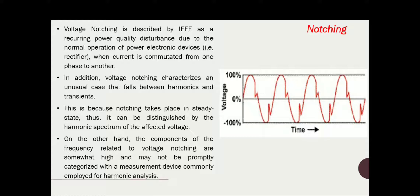Since notching takes place in steady state, we can distinguish it by the harmonic spectrum of the affected voltage. On the other hand, the frequency components related to voltage notching are somewhat high and may not be promptly categorized with the measurement devices commonly employed for harmonic analysis — that is, we cannot categorize the frequency components using devices typically used for harmonic analysis.